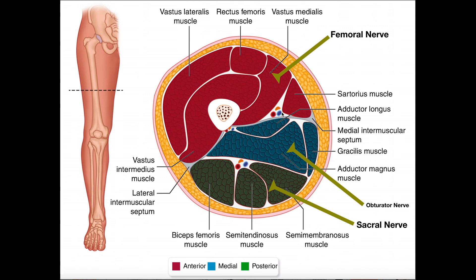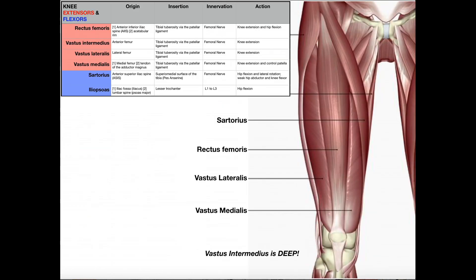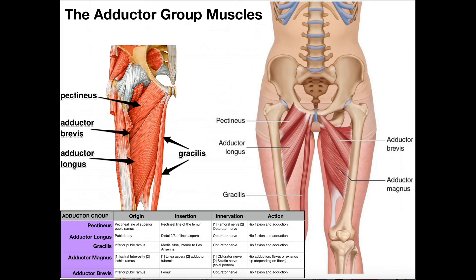Hopefully this figure is helpful for understanding the general nerve supply for each of these three regions of muscles. Please make sure to like this video and subscribe to my channel for future videos and notifications. In the next videos, we will actually be discussing the various muscle groups of the thigh — beginning with the knee extensors, then moving into the hip adductors, and eventually the knee flexors.